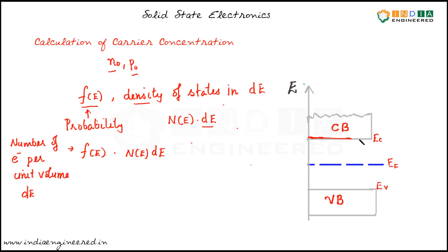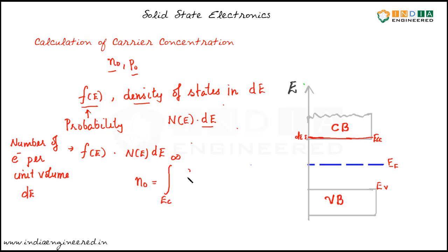Let's say this small portion is our energy range dE. Now, in order to find the total electron concentration in the conduction band, we need to integrate from the band edge to infinity. We integrate from EC — the lower conduction band edge — to infinity, integrating the probability times the density of states, F(E)·N(E)·dE.